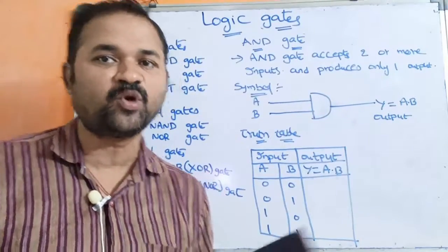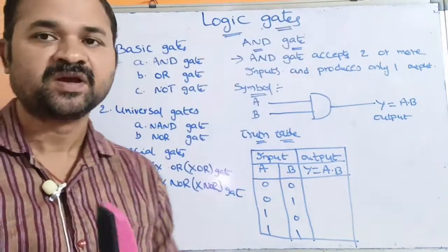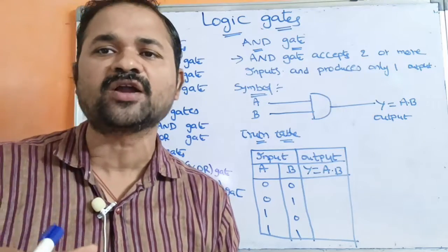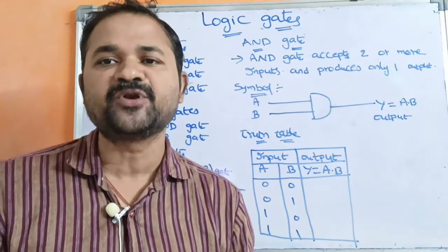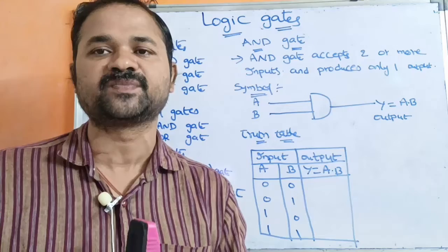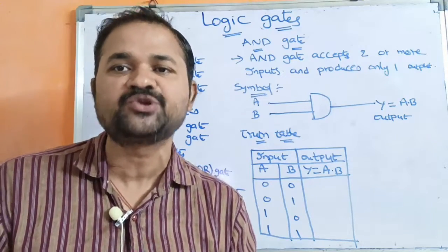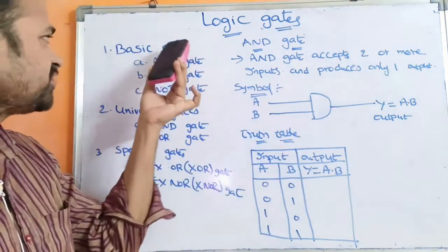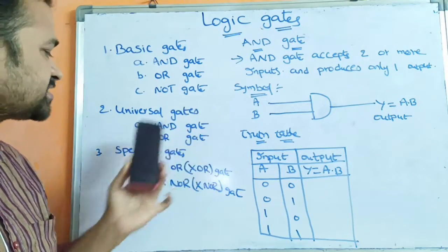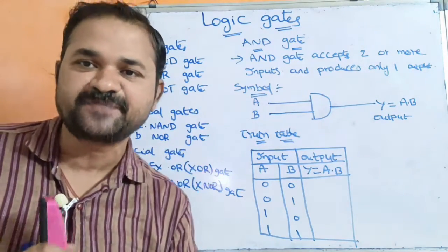Now let us discuss about logic gates. Logic gates accept one or more inputs and produce only one output. We can classify logic gates into three types: the first one is basic gates, the second one is universal gates, and the third one is special gates.